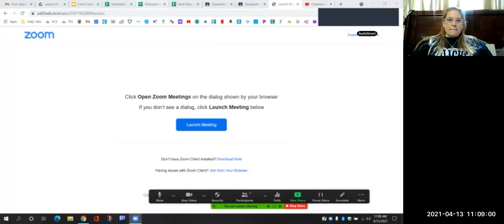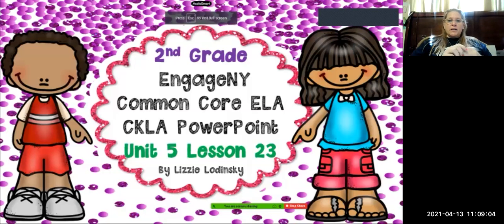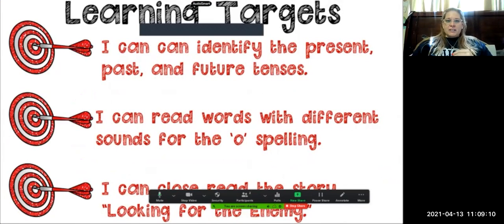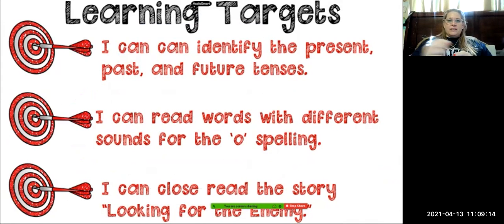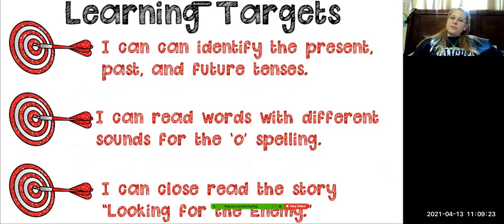Today's phonics lesson is super fast. We are on lesson 23 today in unit five. The learning targets for today are: I can identify the present, past, and future tenses. I can read words with different sounds for the O spelling, and I can close read the story looking for the enemy.